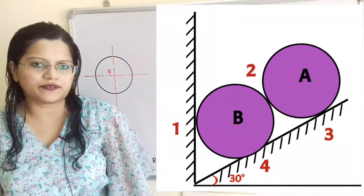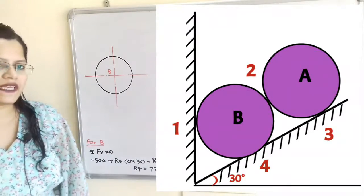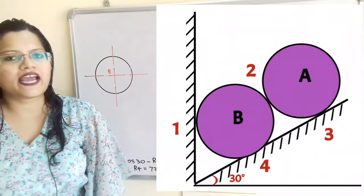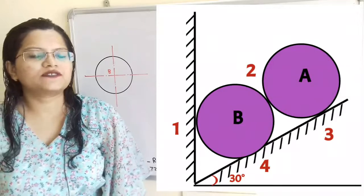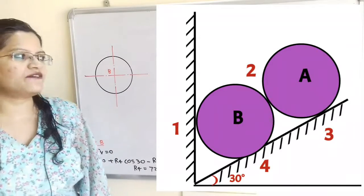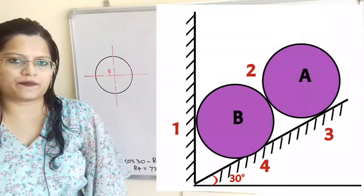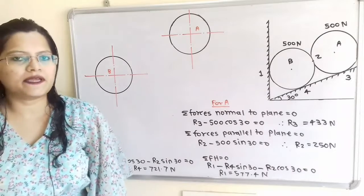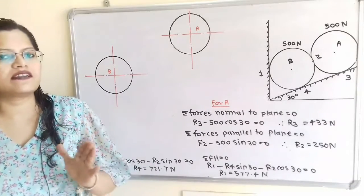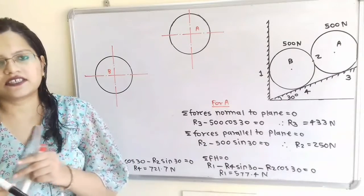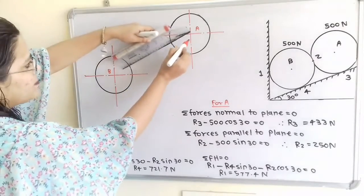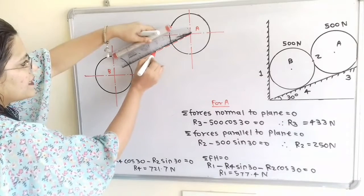Let us understand the given system. There are two identical cylinders A and B which rest on an inclined surface making a 30 degree angle with the horizontal. Cylinder B is also in contact with the vertical surface. We need to find the reactions at the marked contact points. If we join the center points A and B, that line is parallel to the inclined surface because both cylinders are identical and rest on the inclined surface. So the line AB makes a 30 degree angle with the horizontal.